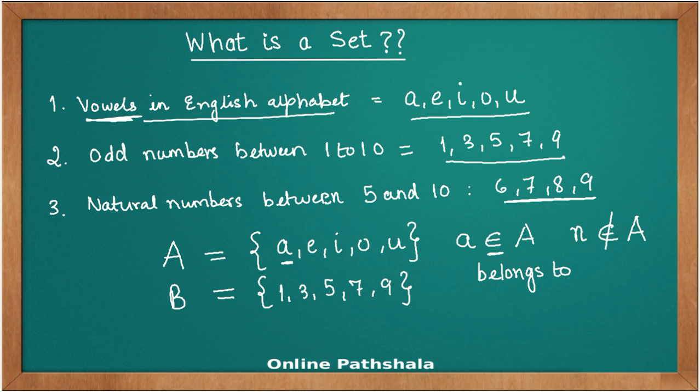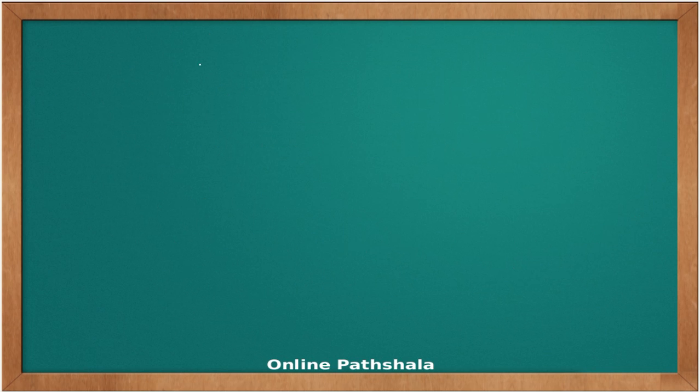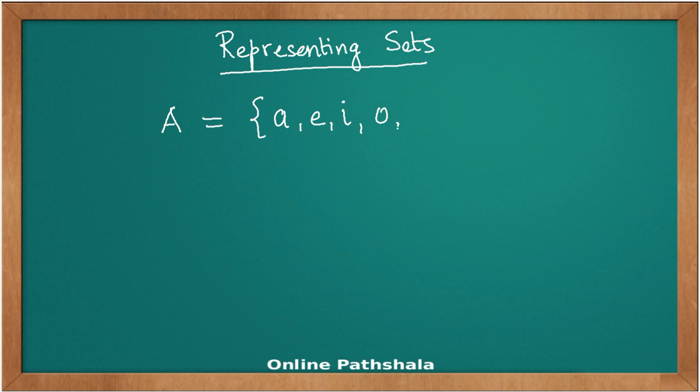Now there is one more thing I would like to touch upon: representing sets in different forms. We already learned one way of representing. I'll just take one example wherein I say that set A has a, e, i, o, and u as elements. If you look at this form, we have written down all the elements that belong to the set. Let us look at another way of writing down the same description of a set.